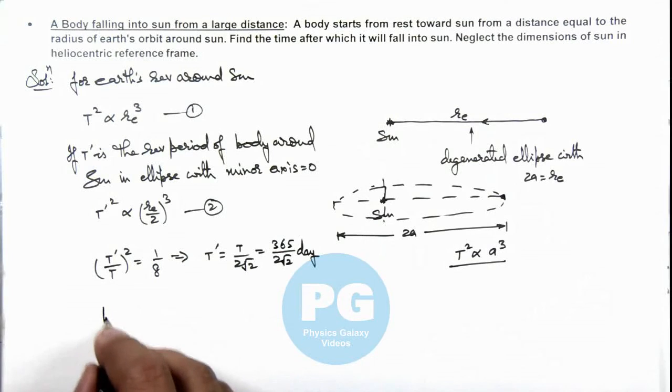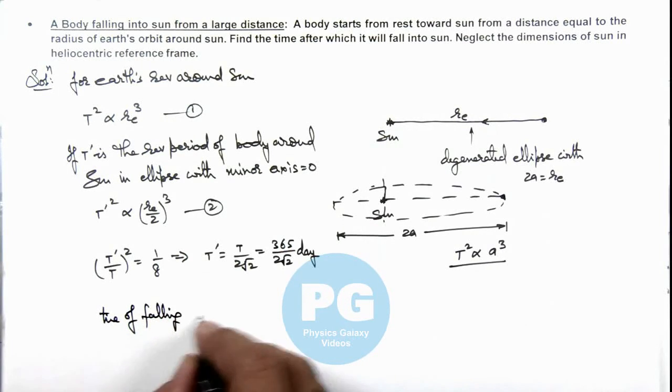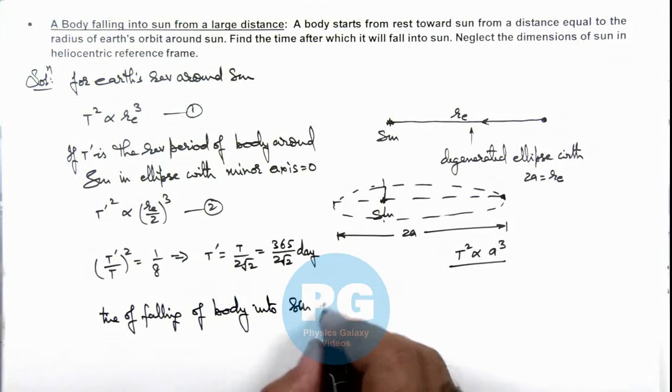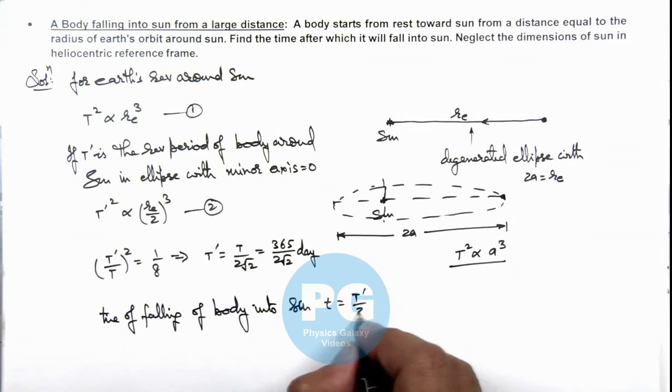So we can write time of falling of body into sun is, this can be written as t equals t prime by 2, which is 365 by 4 root 2 days.